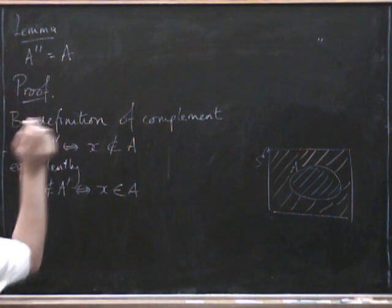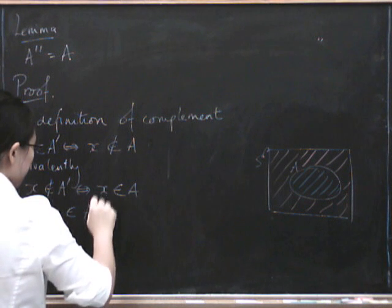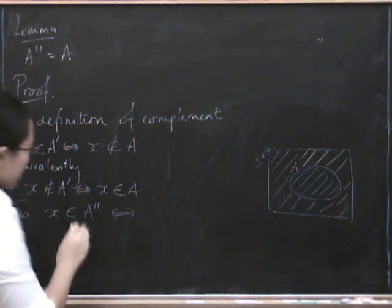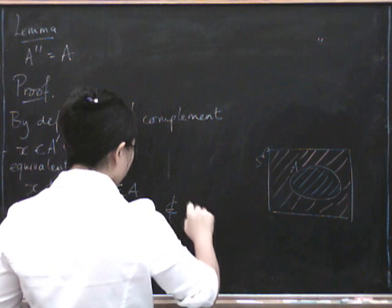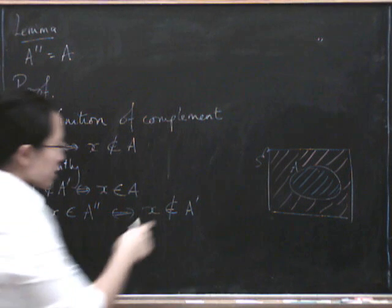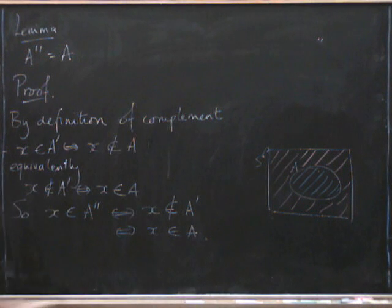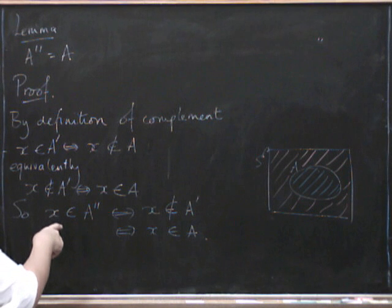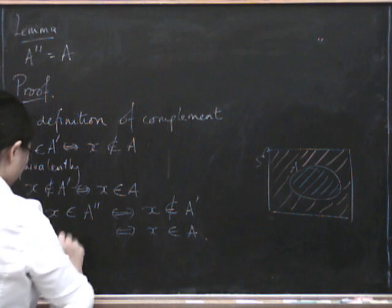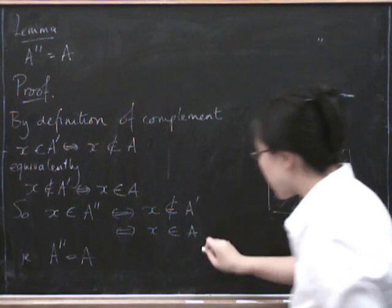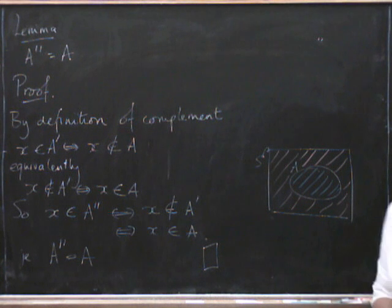So now let's see what we can do about this. x is in A complement complement — that's the complement of A complement. That's true precisely if x is not in A complement, which is true precisely if x is in A. So we've shown our result, which is that x is in A complement complement if and only if x is in A. So that means A complement complement must equal A. We've finished our proof, and what we usually do when we finish the proof is write a little box at the end.